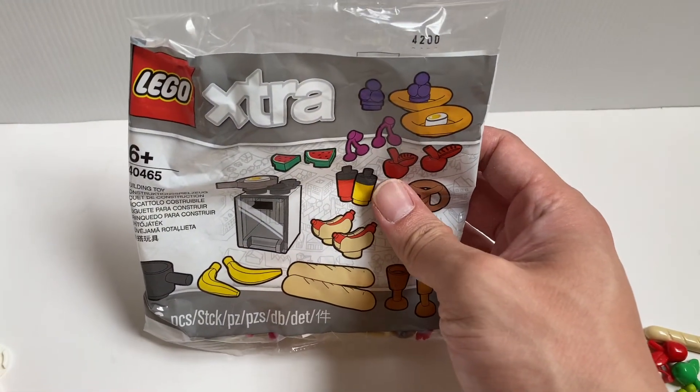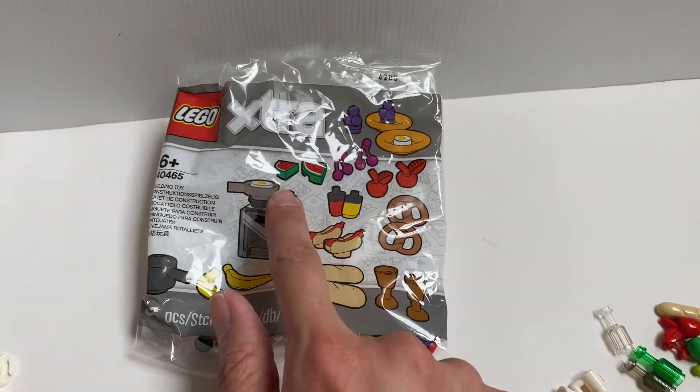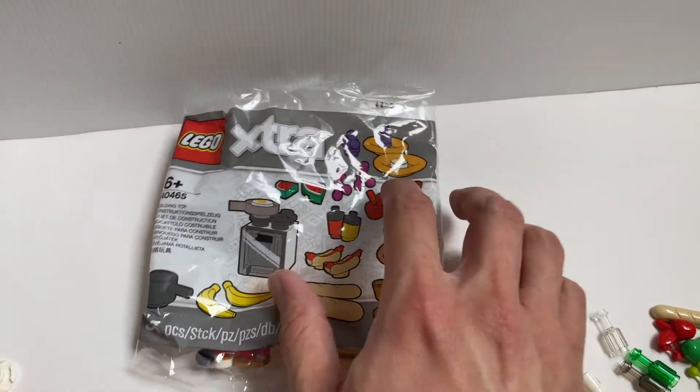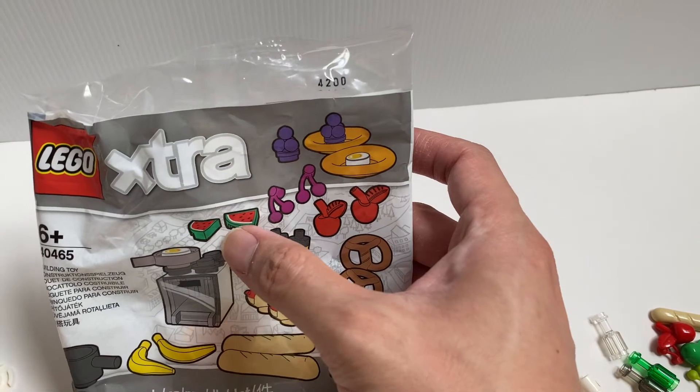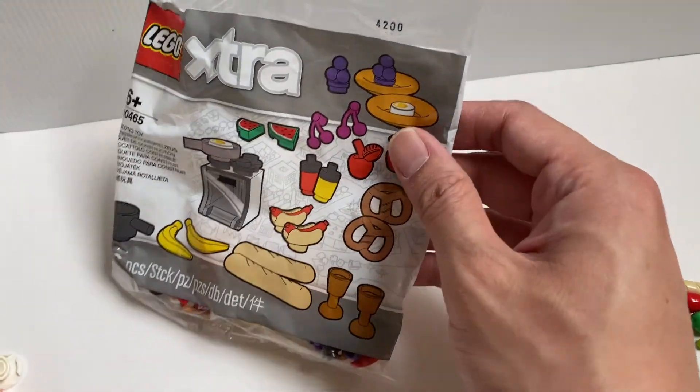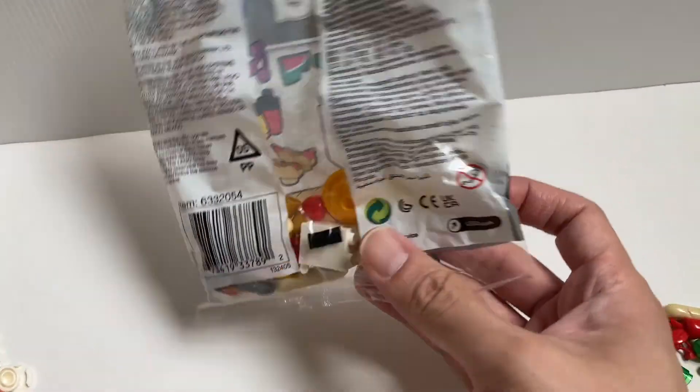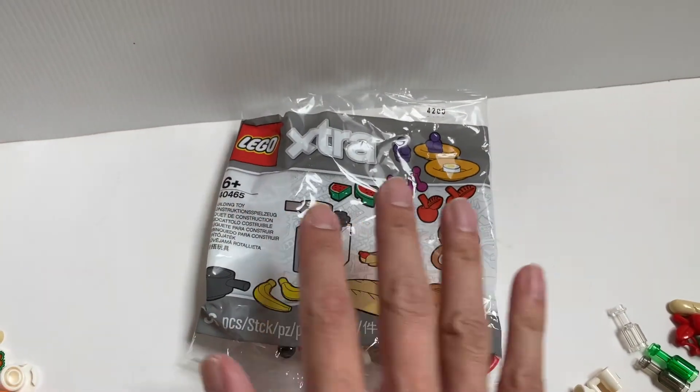Lego also released this Lego extra pack of food. You can see bananas, eggs, sauces, you can call it condiments, watermelon pieces, cherry pieces, and apple and pretzel as well. So there are lots of unique food pieces from Lego lately.